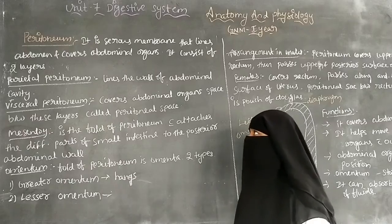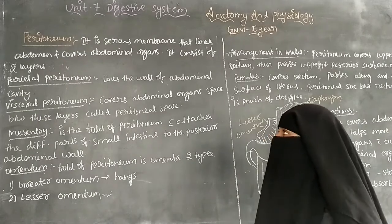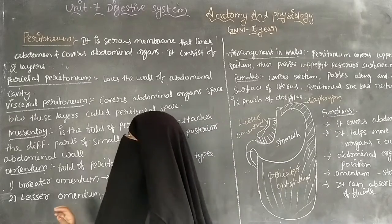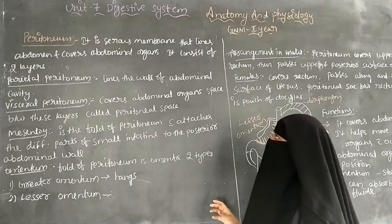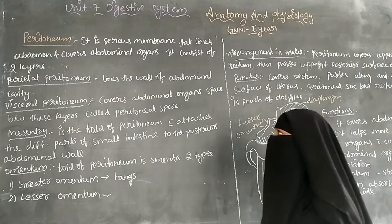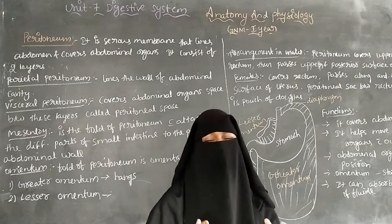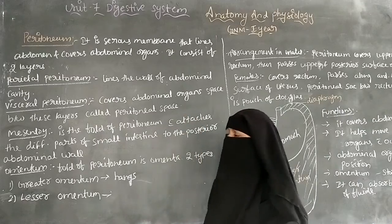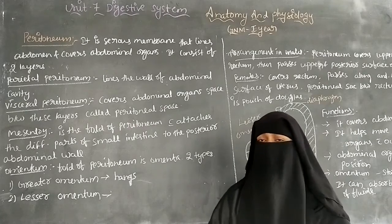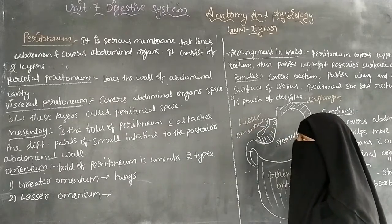Now we are going to discuss about the peritoneum. The peritoneum is also one part of the digestive system. The peritoneum is a serous membrane that lines the abdomen and covers the abdominal organs. It consists of two layers.